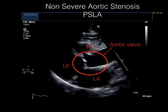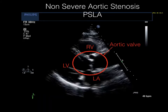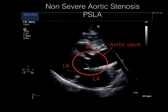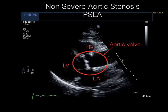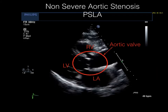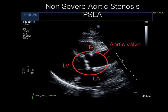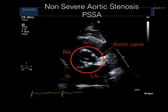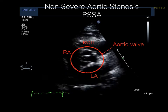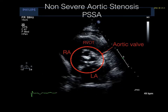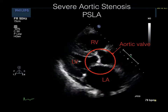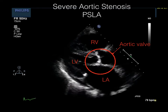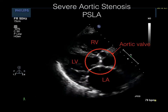Here is a parasternal long axis view of the aortic valve showing some movements of the aortic valve, excluding severe aortic valve stenosis. We can see though that the valve is thickened, looking hyperechoic compared to a normal aortic valve. In this parasternal short axis view, the cusps are moving, but we can still see that this valve is thickened. This is a parasternal long axis view showing no cusp movement of the thickened aortic valve.